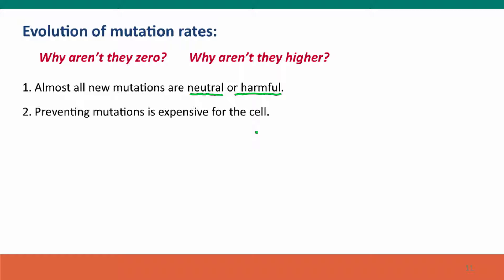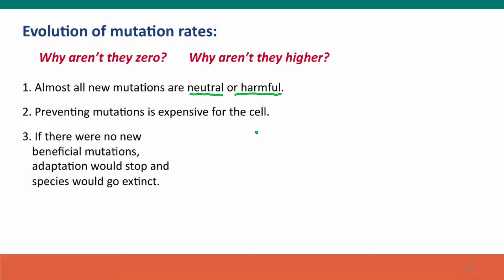I'm not absolutely sure, so I'll throw that base out and try again. This error checking gets very expensive for the cell. If there were no beneficial mutations, well, that would be bad because adaptation would stop. Species would go extinct because they couldn't change.